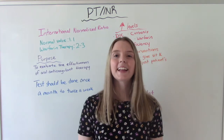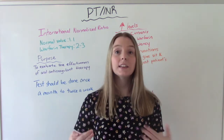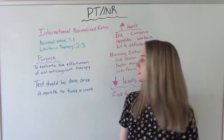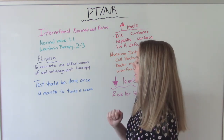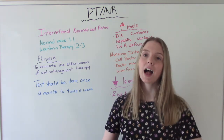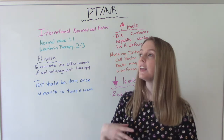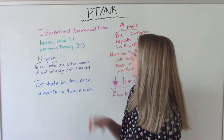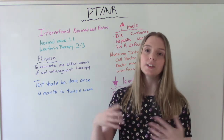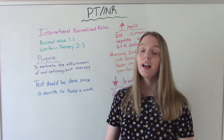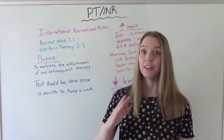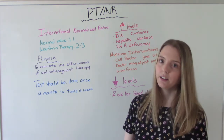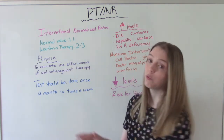Now let's talk about the INR. What does that stand for? It means international normalized ratio. The purpose of this is to evaluate the effectiveness of oral anticoagulant therapy — warfarin therapy. We use this a lot on patients who are on warfarin. If you were to do this on somebody who wasn't on warfarin, the normal value would be 1.1. But if they are on warfarin, it'll be two to three, so we expect it to be a little longer because of the anticoagulant medication. How often this is done depends on the individual — at minimum once a month, and some people have to get this done twice a week.